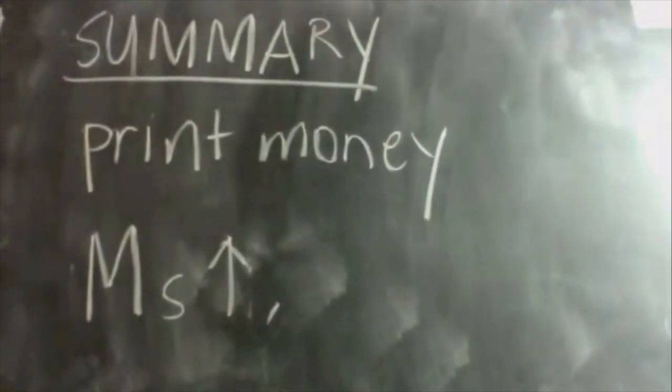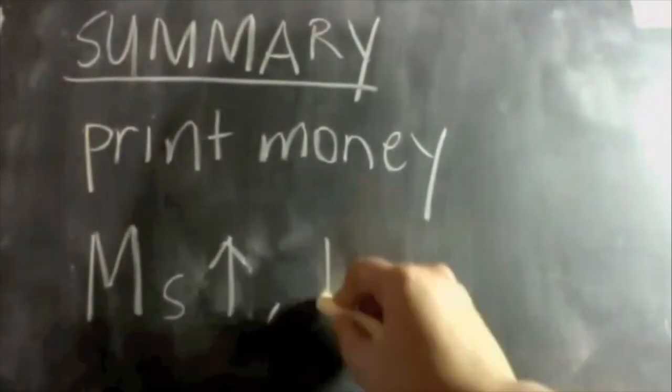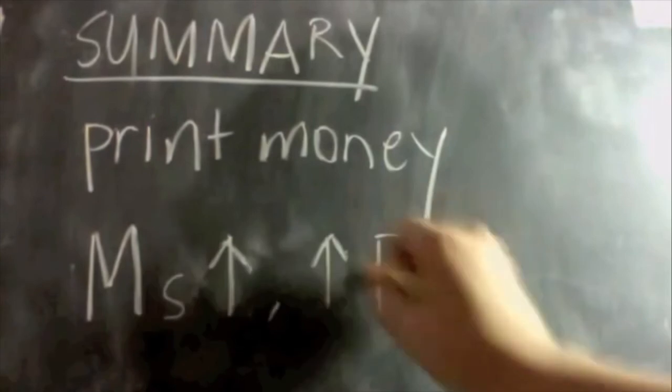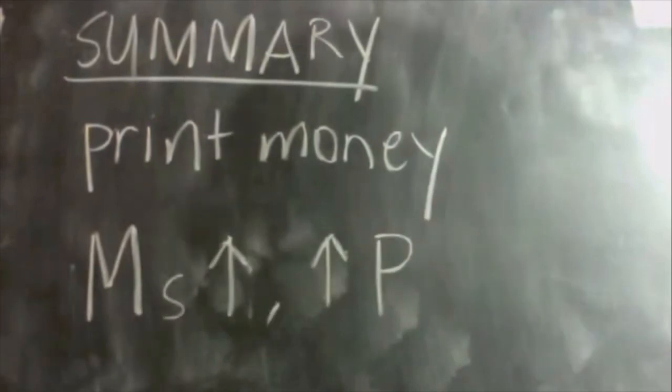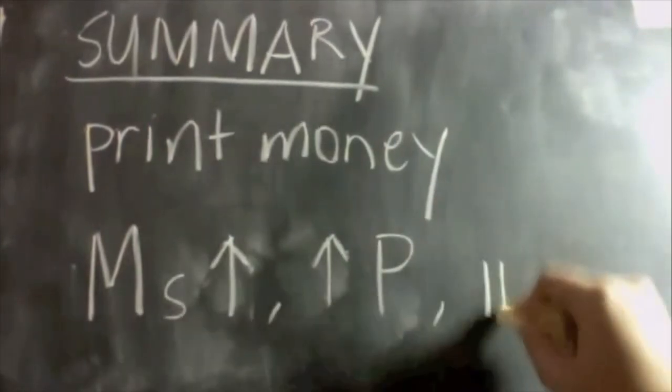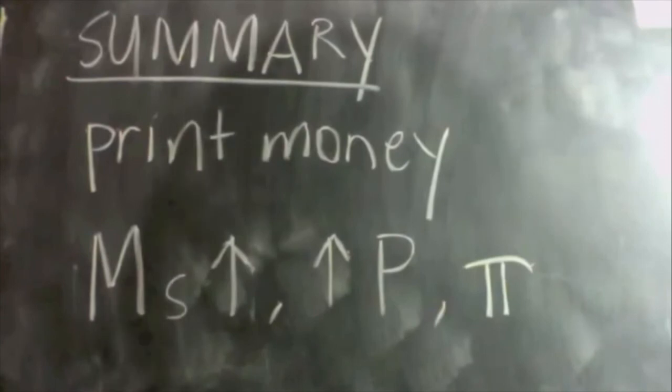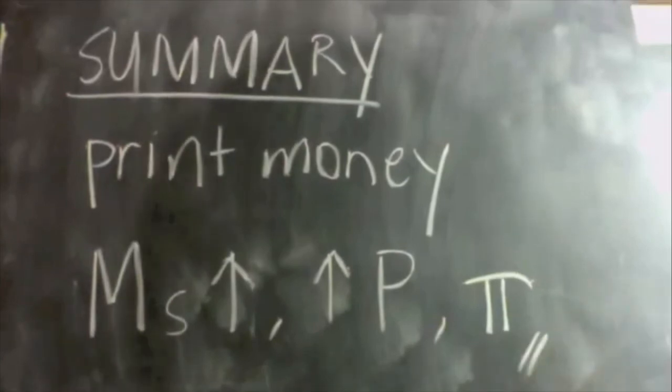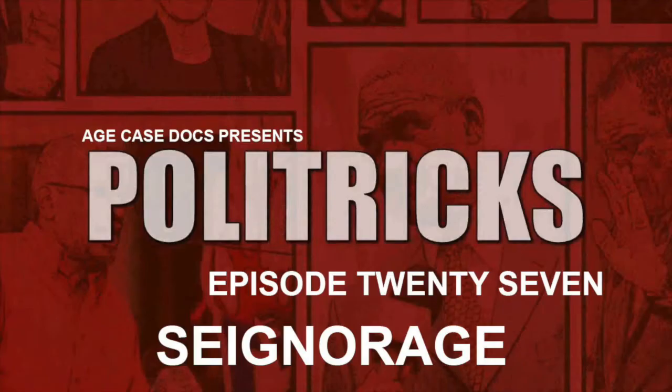With a ratio of 1 to 12 of notes and coins to bank deposits in 1985, to a ratio of 1 to 37 of notes and coins to bank deposits in 2008, only 2.6% of all money in the economy is physical cash, and the rest is electronic commercial bank money.